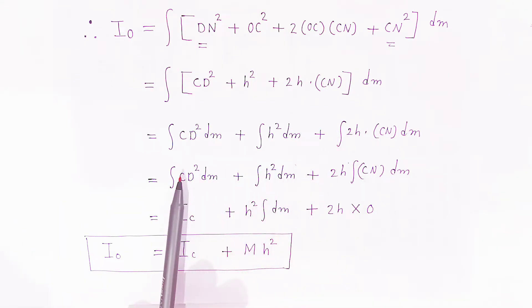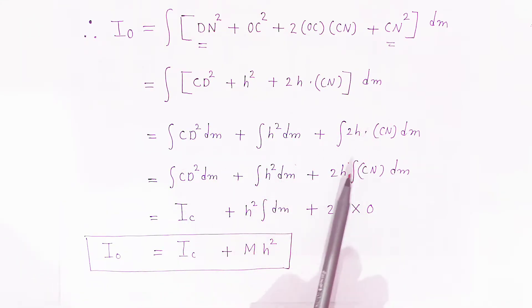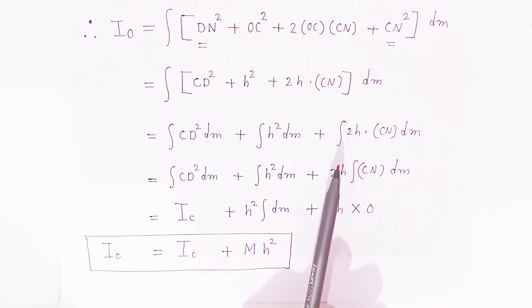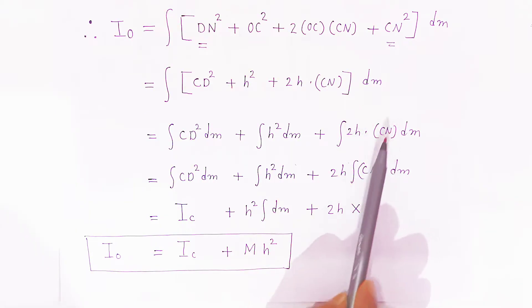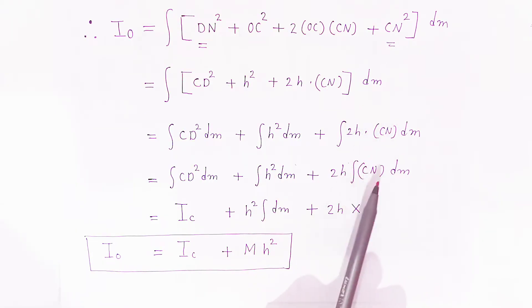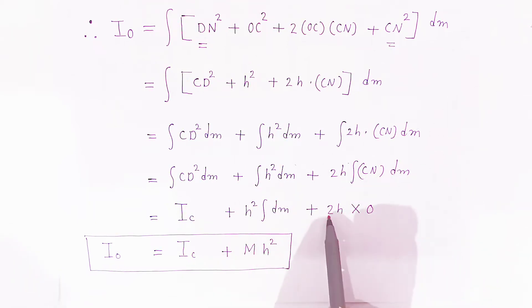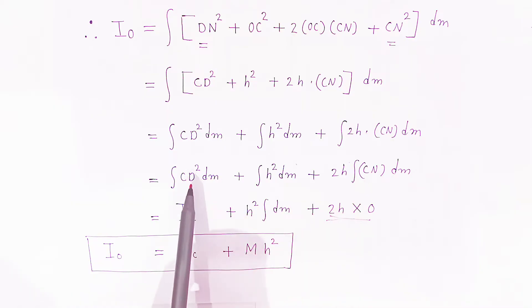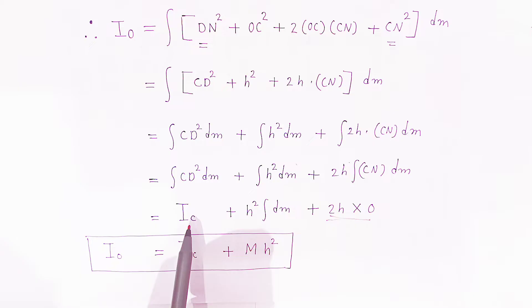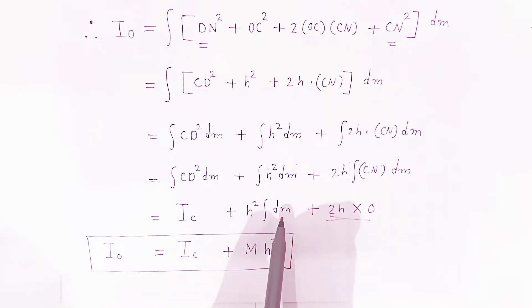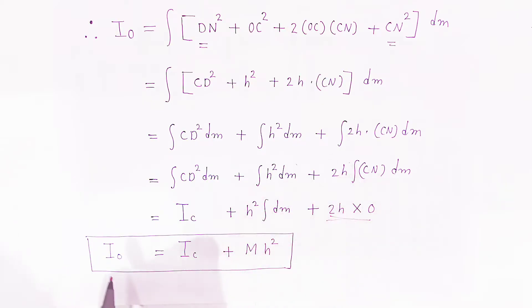Integration of CD squared DM plus integration of H squared DM plus integration of 2H times CN DM. Now H squared and 2H are constants, so 2H comes out: integration of CD squared DM plus H squared integration of DM plus 2H integration of CN DM. Integration of CN equals zero, so that whole term vanishes. Integration of CD squared DM is nothing but IC, and integration of DM gives capital M. Therefore IO equals IC plus MH squared, and the theorem is proved.